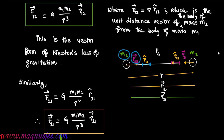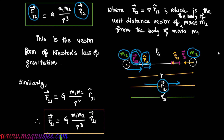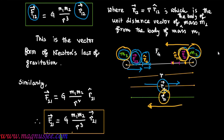Vector F12 is the force experienced by m1 due to m2 and acts from m1 to m2. Vector F12 is parallel to r12 cap and also parallel to vector r12, which is why vector r12 appears in the expression of vector F12. Similarly, vector F21 acts from m2 to m1, so the expression of vector F21 contains r21 cap.